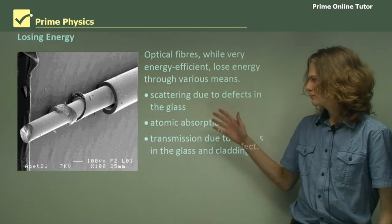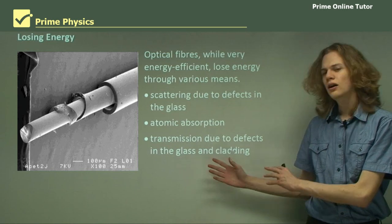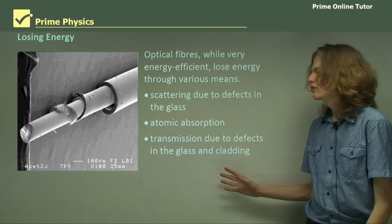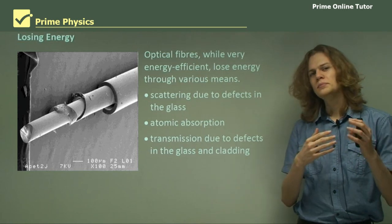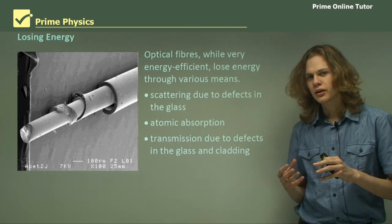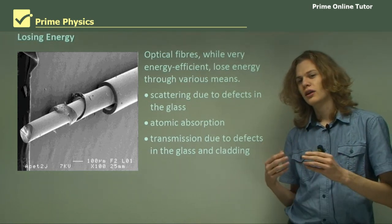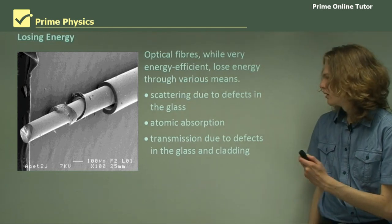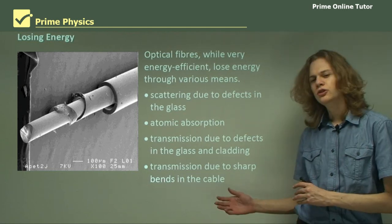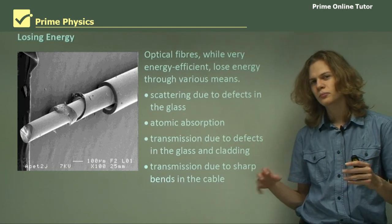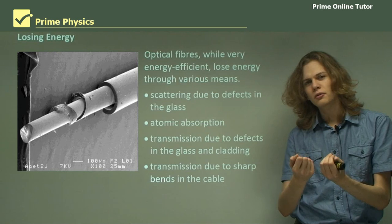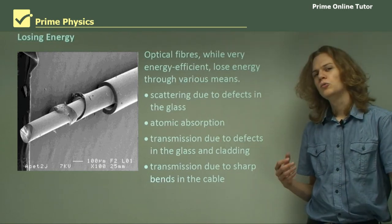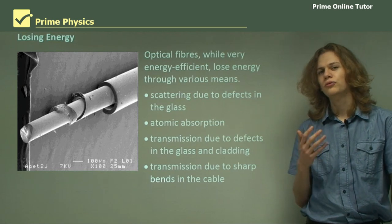The glass that is the core of the optic fiber and the cladding might not always be perfectly smooth. And if our transmitted light is to hit a bump, it might start refracting. And finally, transmission due to sharp bends in the cable — if we bend the optic fiber tightly enough, it means that we won't get total internal reflection anymore.